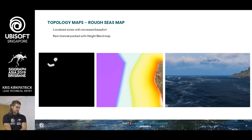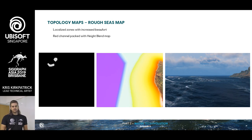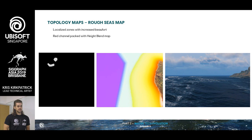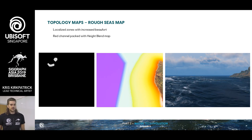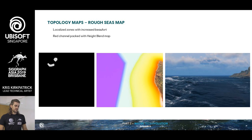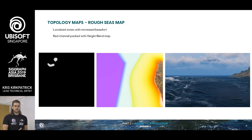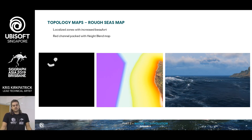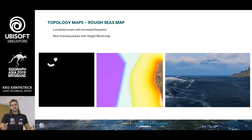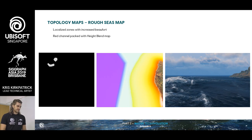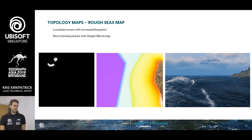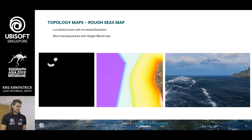Our GOVC map — these are static placed zones that designers have free control over to have higher Beaufort. One example could be a high-wind channel, or maybe the Bermuda Triangle is always high Beaufort, whatever we want. It's one extra layer of control for variety for the designers to use.